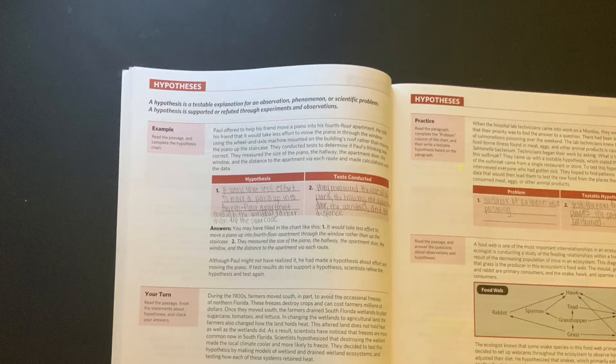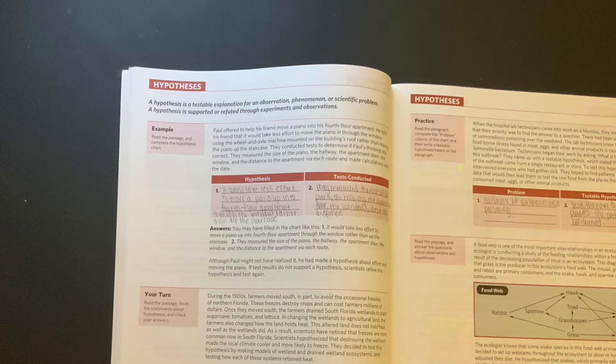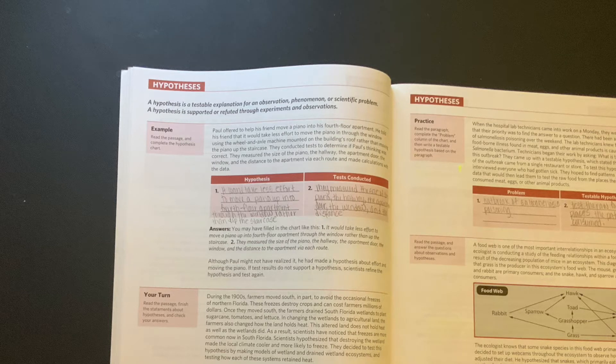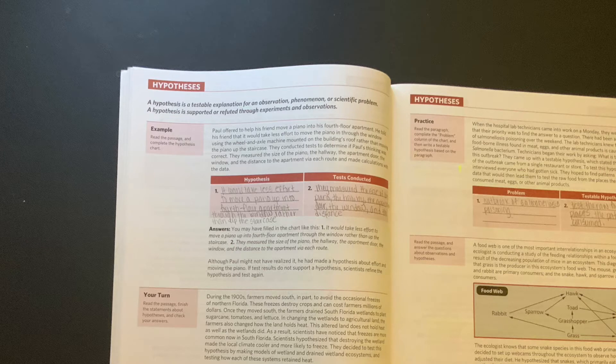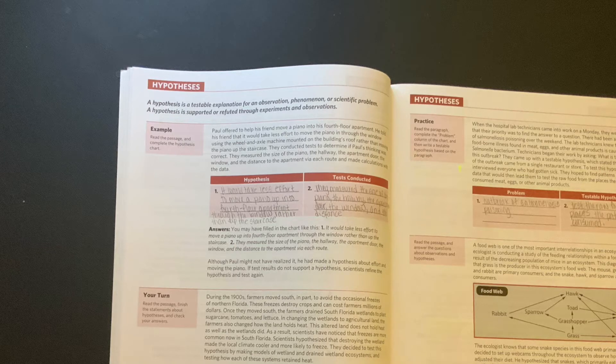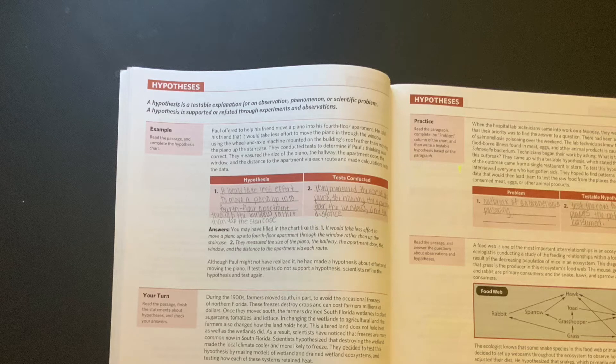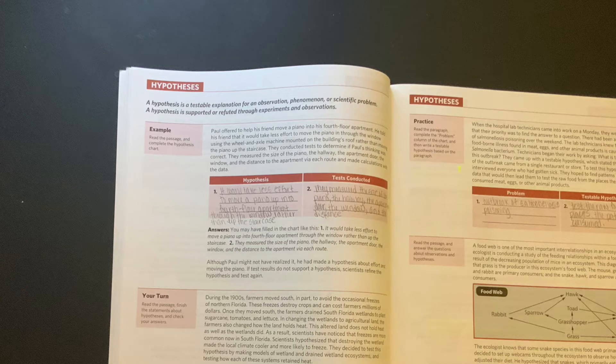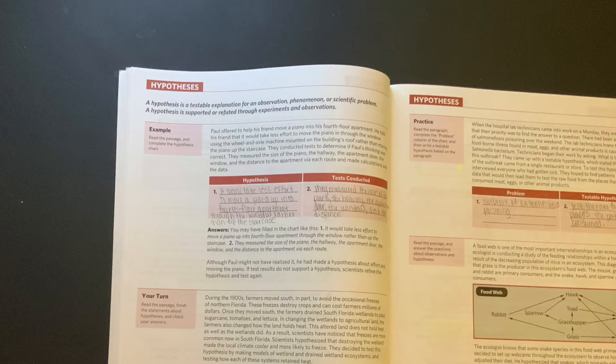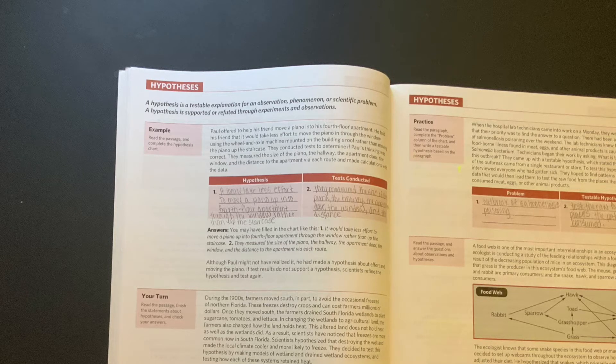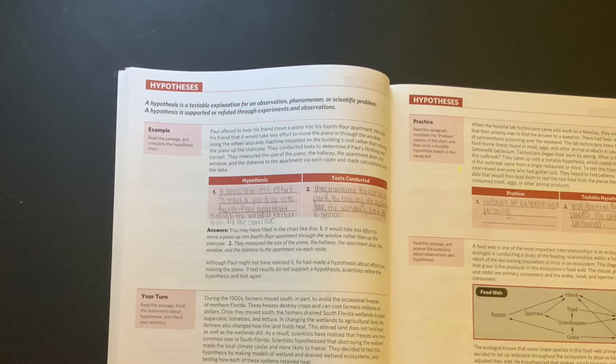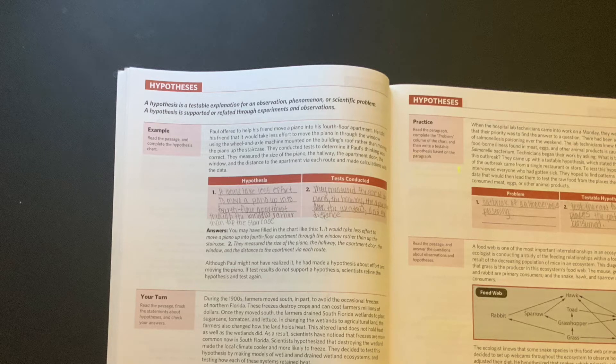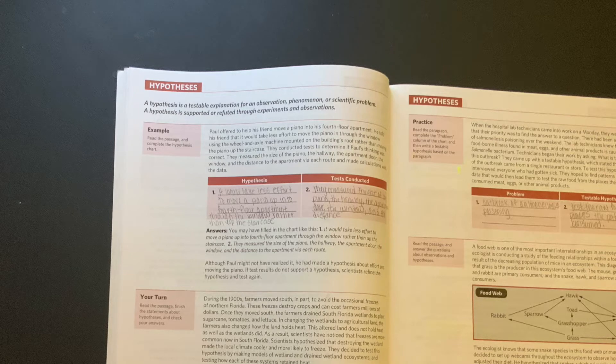Scientists hypothesized that destroying the wetland made the local climate cooler and more likely to freeze. They decided to test this hypothesis by making models of wetland and drained wetland ecosystems and testing how each of these systems retain heat. Okay, so we have two problems. Let's go ahead and fill in the blanks. What problem can be inferred from the passage? Freezes are more common in south Florida than they were before farmers drained the wetlands. Next problem: what testable hypothesis might explain the cause of these freezes in south Florida? One testable hypothesis is that the drained land made the local climate cooler and more likely to freeze.